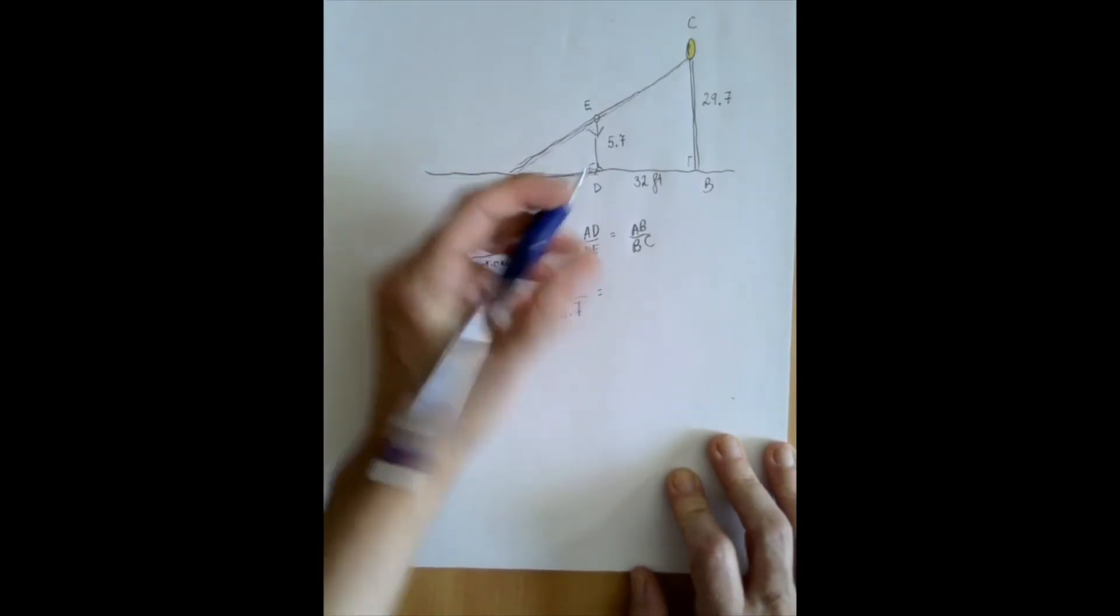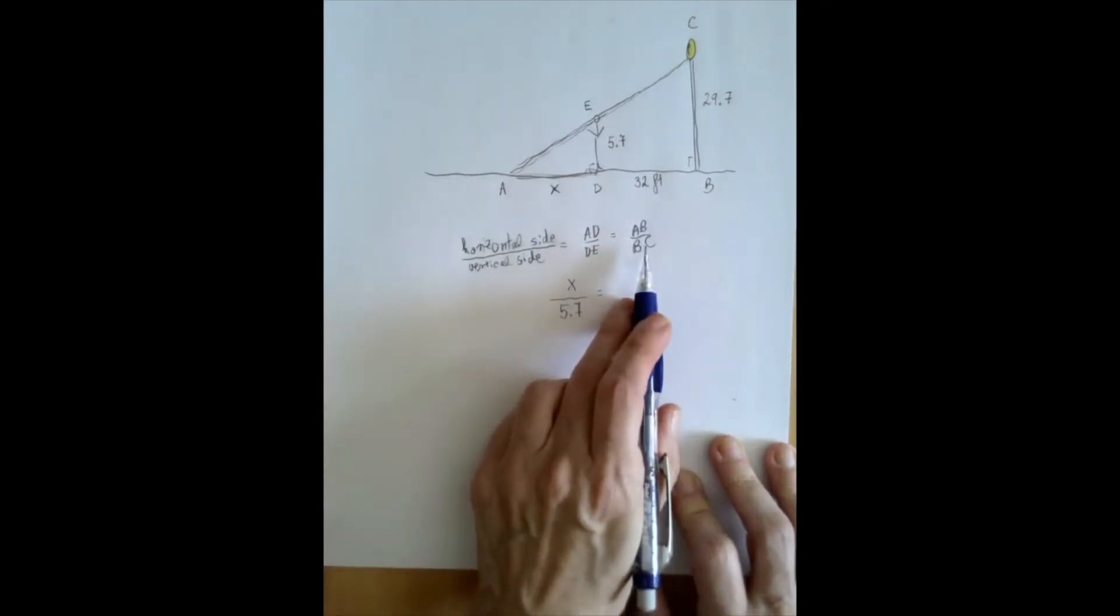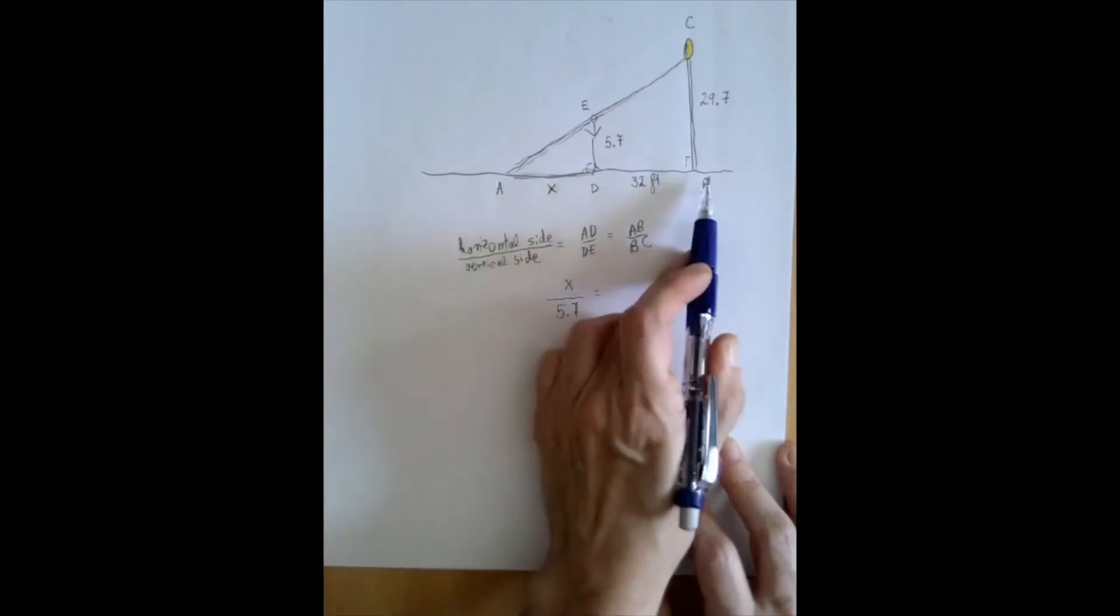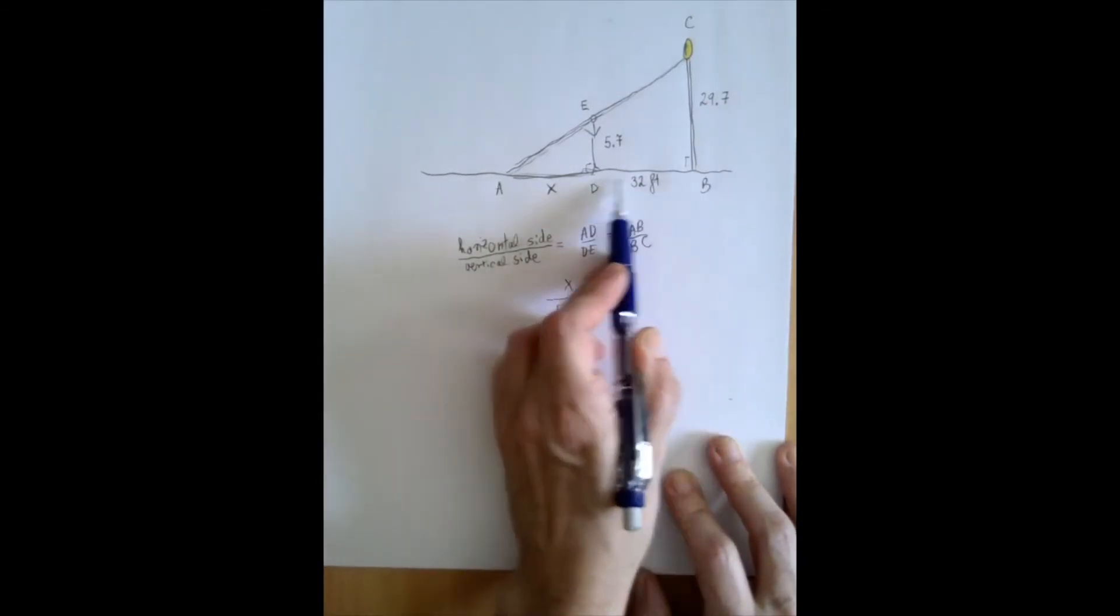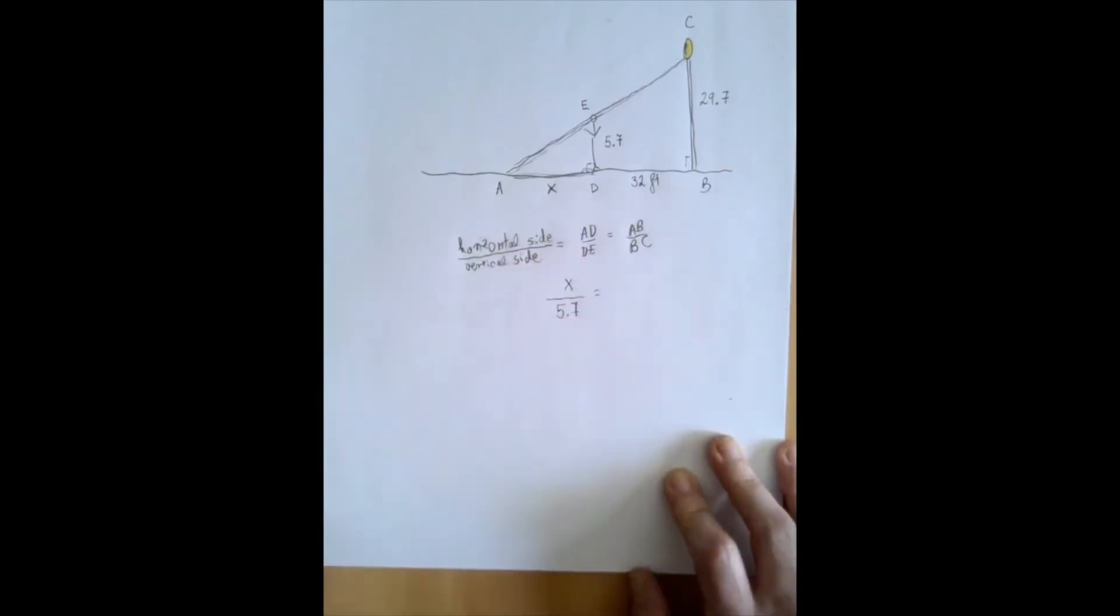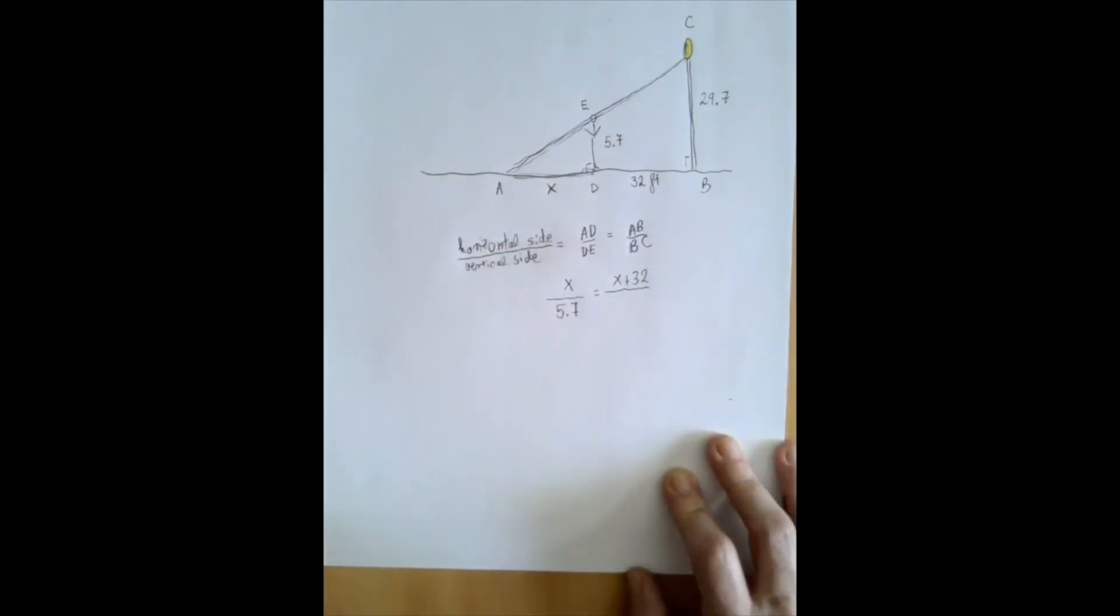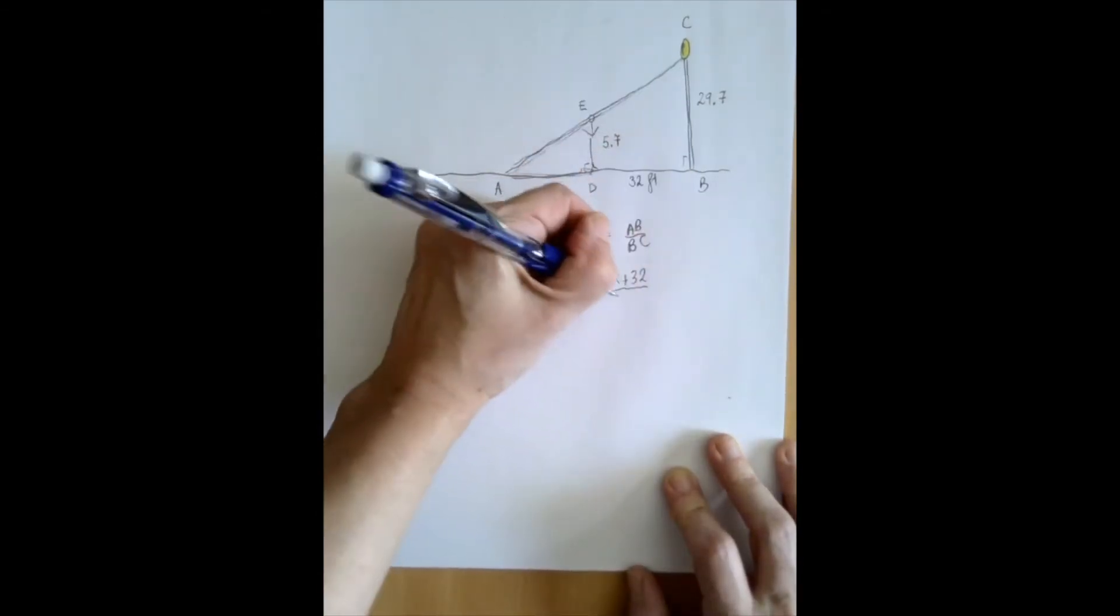AD is X, DE is 5.7, AB... This is the danger spot in this problem, because 32 is side of no triangle here. The longer side is X plus 32. That's where people usually mess up. And so the horizontal side is X plus 32, the vertical side is 29.7.